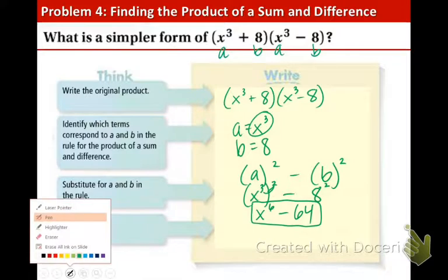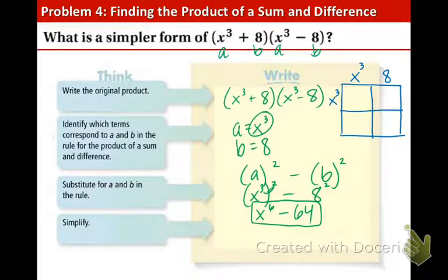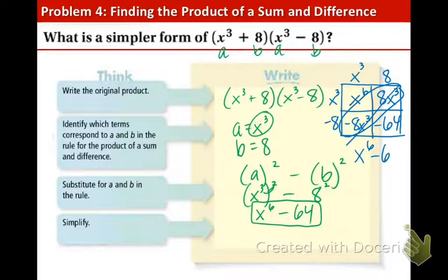Now just in case you were lost, I'd like to show you the table method. So write this on the side where there is some free space. And label the sides and multiply. x³ times x³, remember we're adding the exponents so we get x⁶. x³ times 8 is 8x³. Negative 8 times x³ is negative 8x³. And negative 8 times 8 is negative 64. Conveniently, the diagonal terms are opposite so they cancel. So we get x⁶ - 64. And that is the exact same thing that we got in the shortcut method just a moment ago.